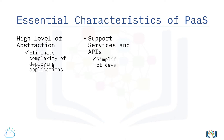PaaS clouds provide services and APIs that help simplify the job of developers in delivering elastically scalable and highly available cloud applications. These services typically include a variety of capabilities, such as APIs for distributed caching, queuing, and messaging, file and data storage, workload management, user identity, and analytics, thus eliminating the need to integrate disparate components.